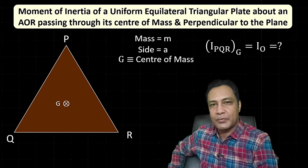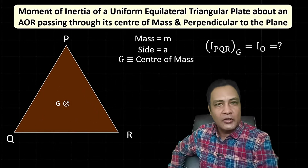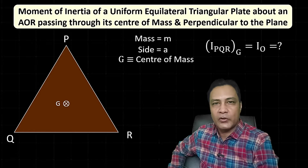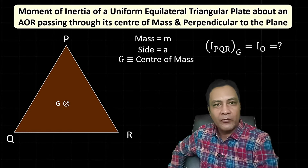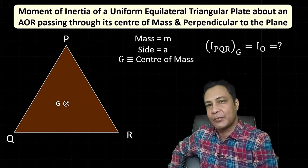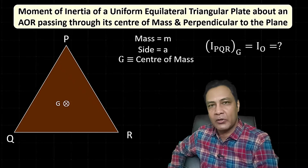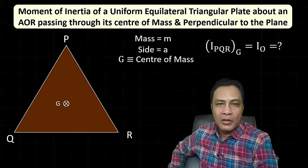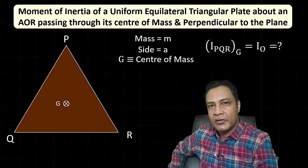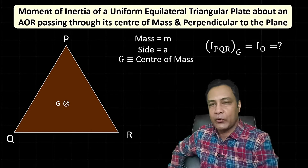Hey, this is Prajish Chaudhary of Quantum Guru. In this video I'll talk about how to calculate the moment of inertia of a uniform equilateral triangular plate about an axis that passes through its center of mass and perpendicular to its plane, without using integration — using only symmetry arguments.